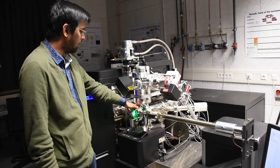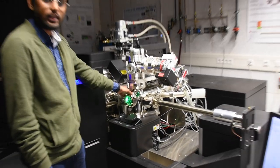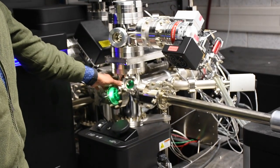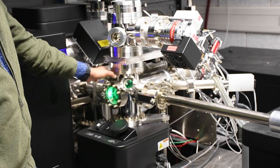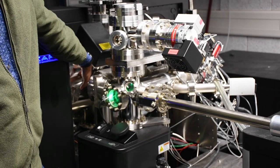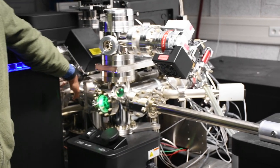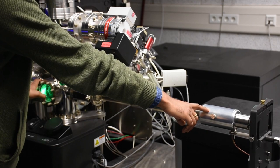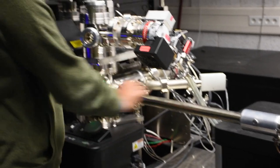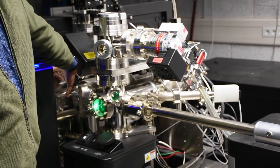Now that our sample is inside our buffer carousel, we waited for the pressure to get good so that we can open the valve between the buffer chamber and the analysis chamber. To move the sample from the buffer chamber to the analysis chamber, we use the horizontal manipulation rod, and we lock in our sample and move it to the analysis chamber.